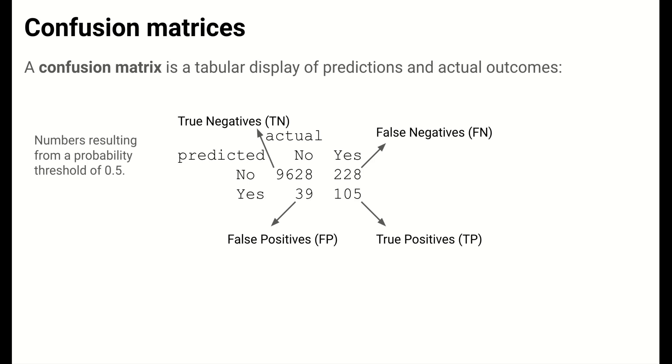The other two counts are cases of correct predictions and are called true positives and true negatives.